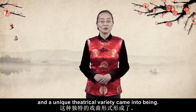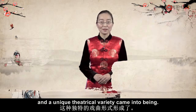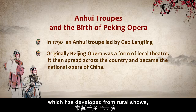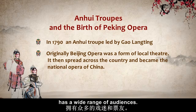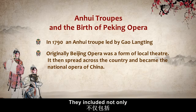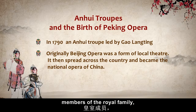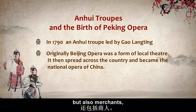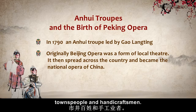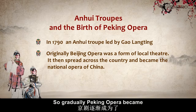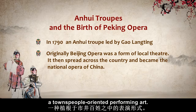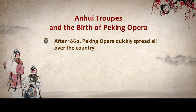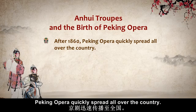By that time, what these Anhui troops were offering was Peking Opera, and a unique theatrical variety came into being. Peking Opera, which has developed from rural shows, has a wide-range audience. They included not only members of the royal family, the high-ranking officials and scholars, but also merchants, townspeople, and handicraftsmen. So, gradually, Peking Opera became a townspeople-oriented performing art. After 1860, Peking Opera quickly spread all over the country.